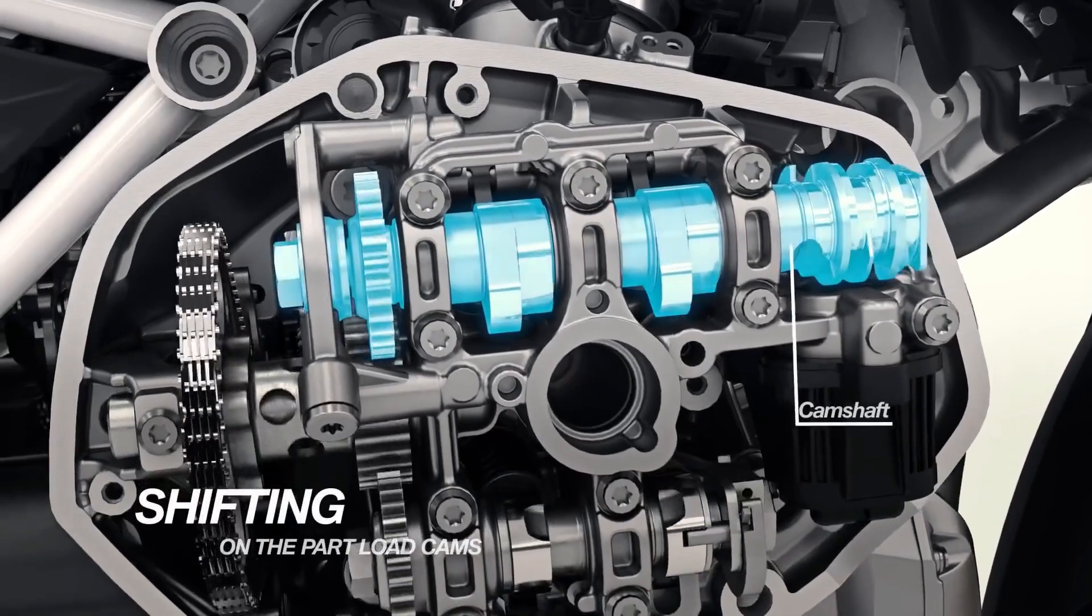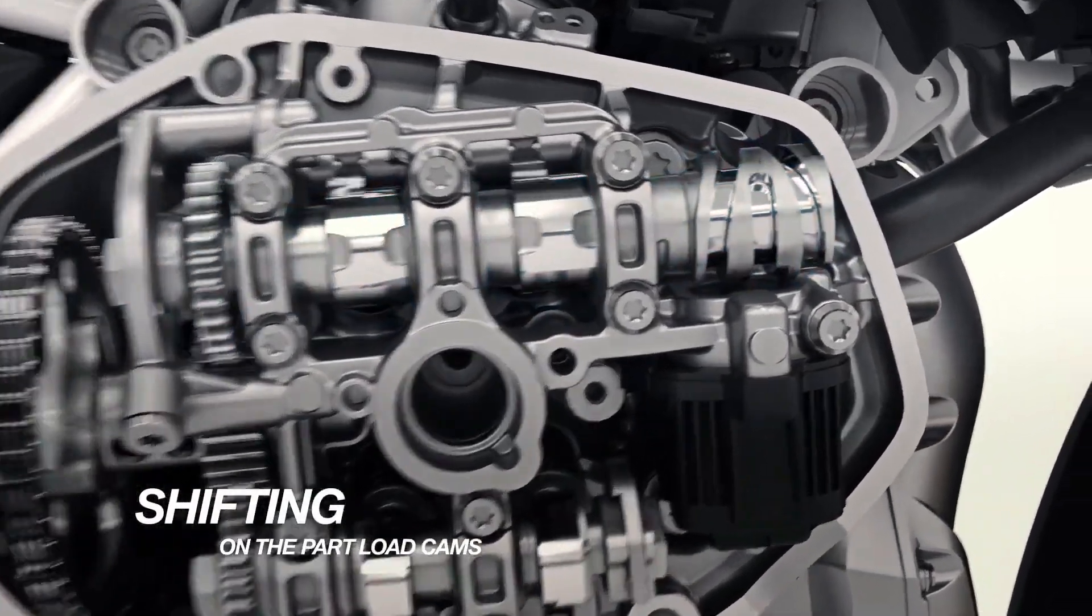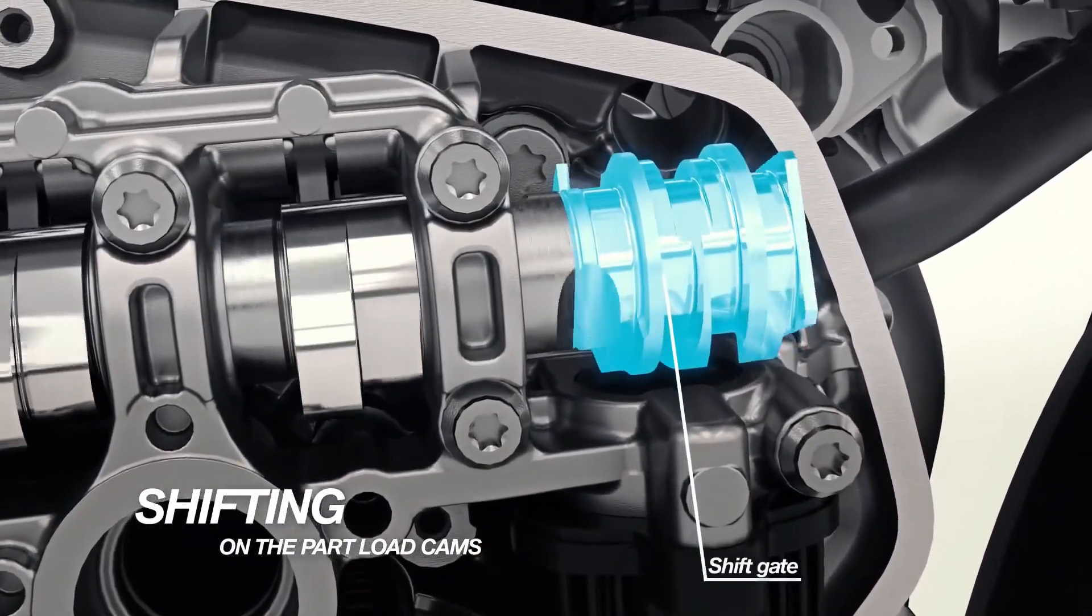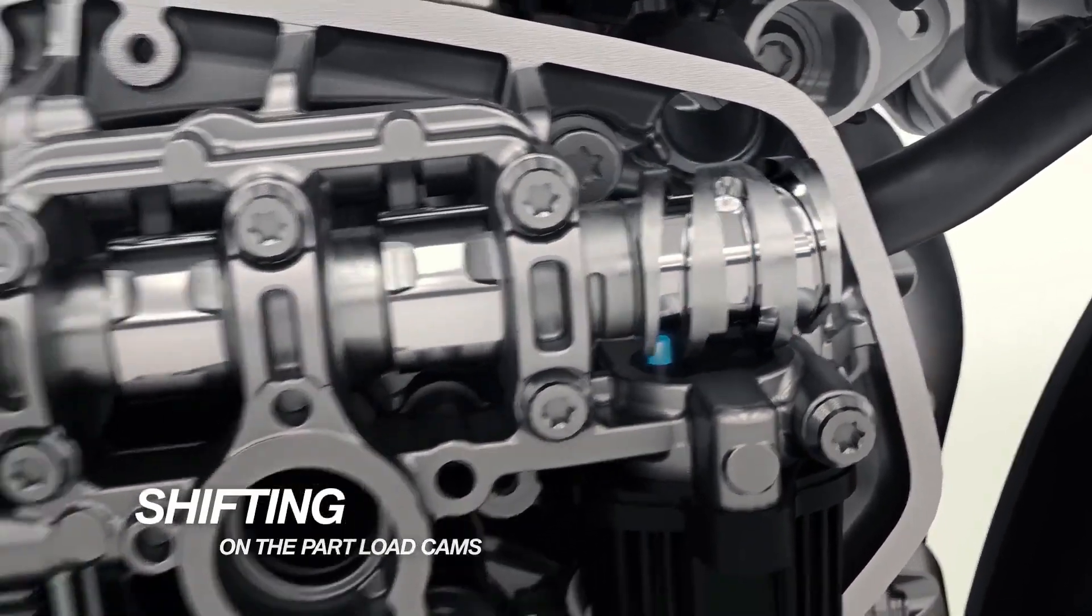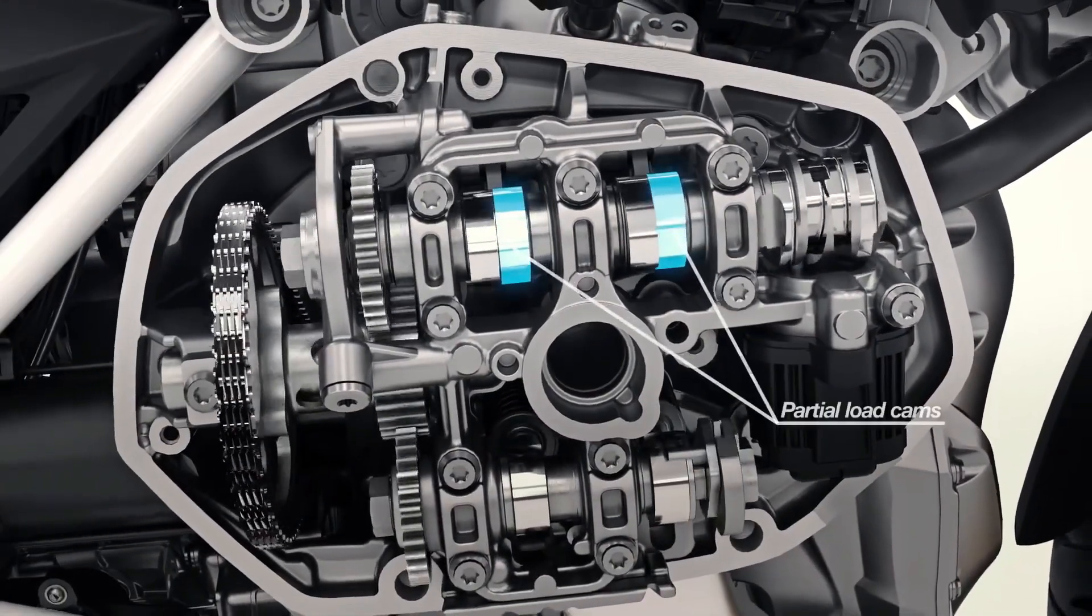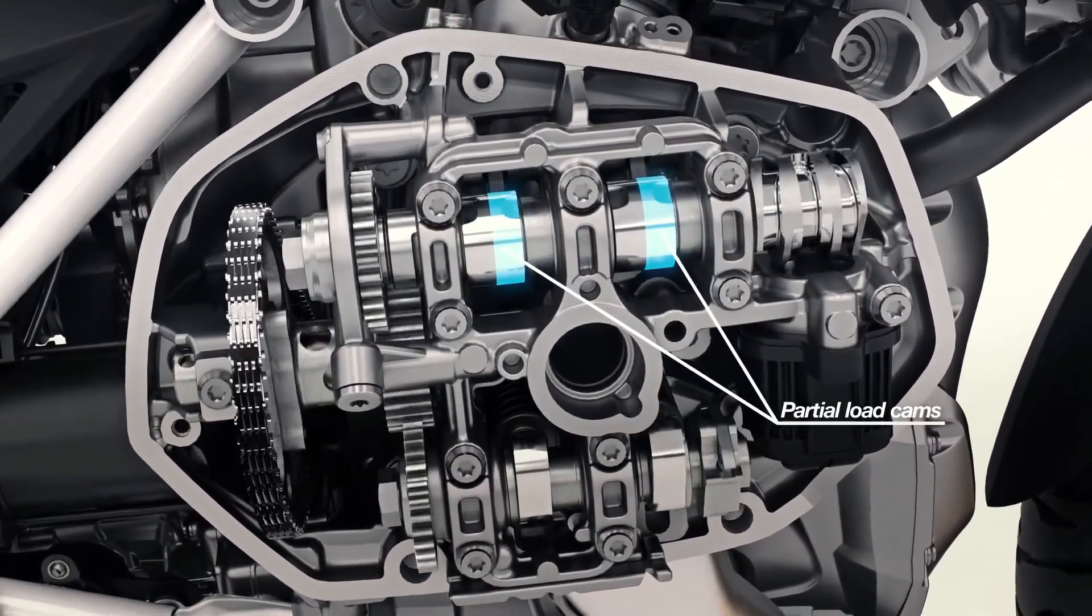In more extreme conditions, it will open to allow more airflow, although nothing more than a patent. The fact that the model they are using is the RGS suggests that it could be installed in the new R1300GS which is expected to arrive at the end of 2023.